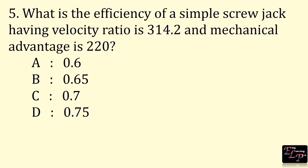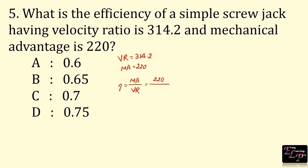What is the efficiency of a simple screw jack having a velocity ratio of 314.2 and a mechanical advantage of 220? Given: velocity ratio = 314.2, mechanical advantage = 220. Efficiency is given by mechanical advantage divided by velocity ratio, which equals 220 divided by 314.2, equal to 0.7.